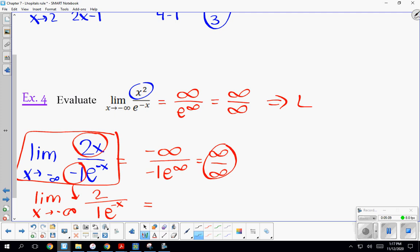If I try direct substitution now, I get 2 divided by 1 times e^∞, which is 2 over infinity. Thinking in our pizza idea, each piece is so small it's approaching 0.